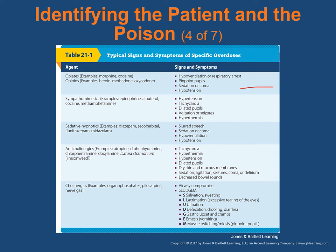Another presentation we may see is sympathomimetics. A sympathomimetic mimics the fight-or-flight system inside the body. The patient will have hypertension, tachycardia, dilated pupils — pupils dilate so they can bring in more light — agitation or seizures, even hyperthermia. This is especially seen with methamphetamines. A lot of the rave drugs fall into the sympathomimetic category, so you want to be very concerned about these.